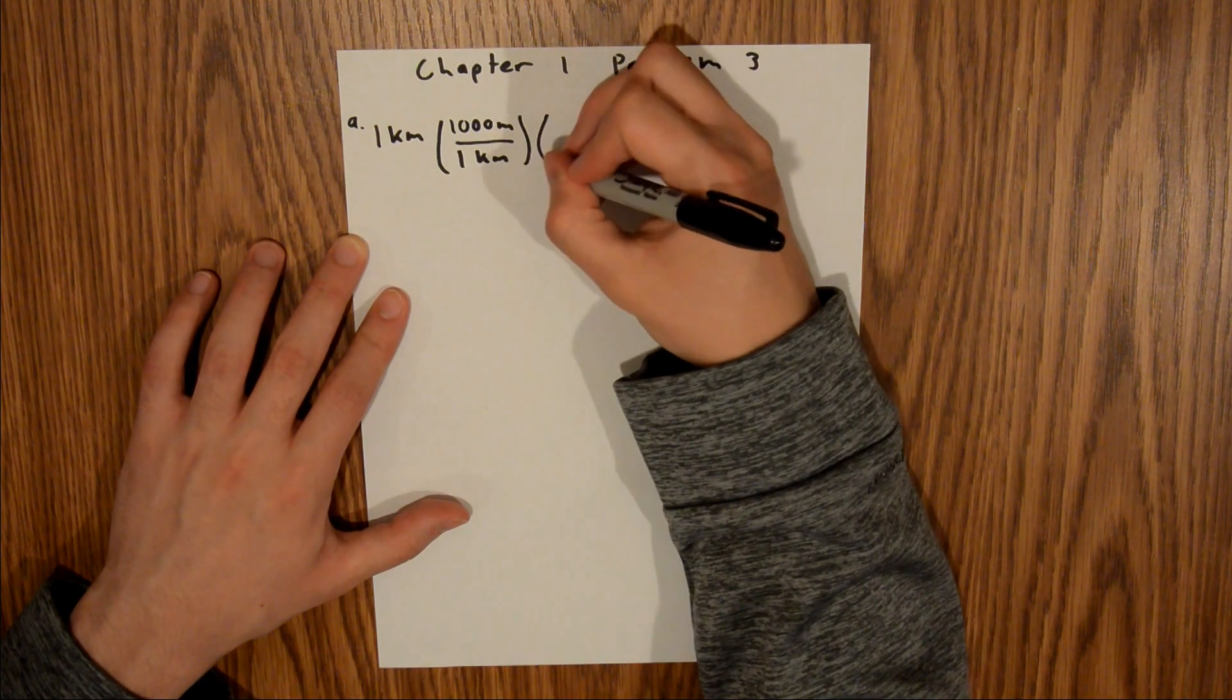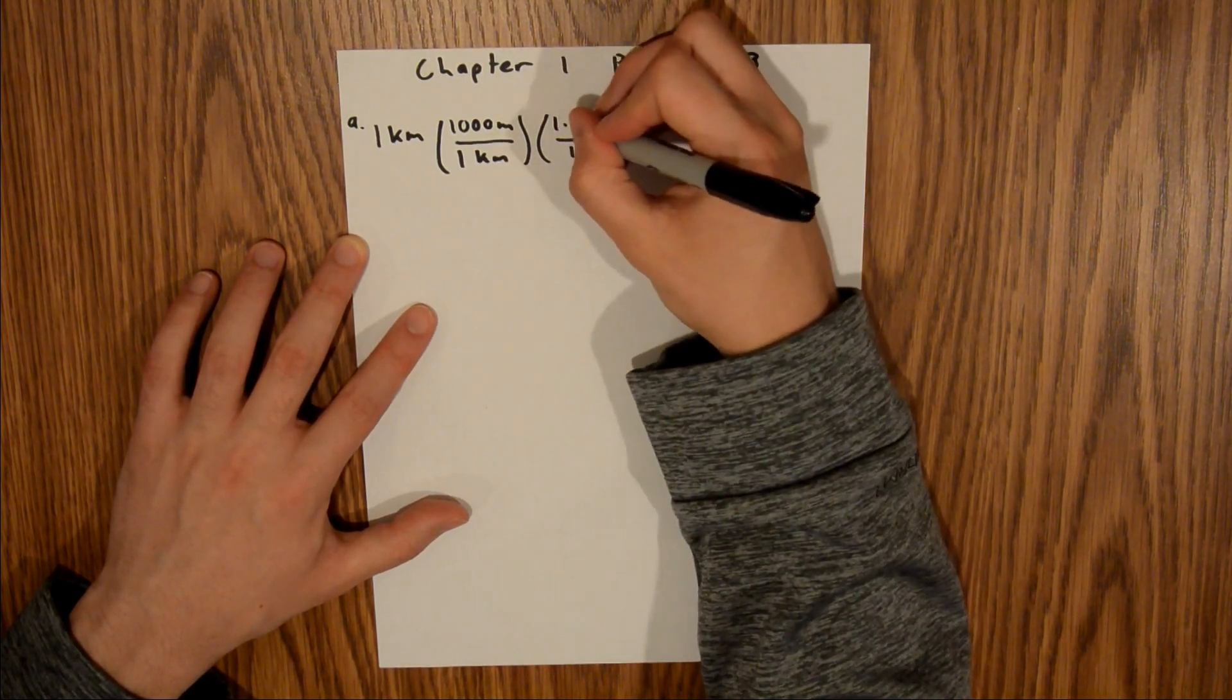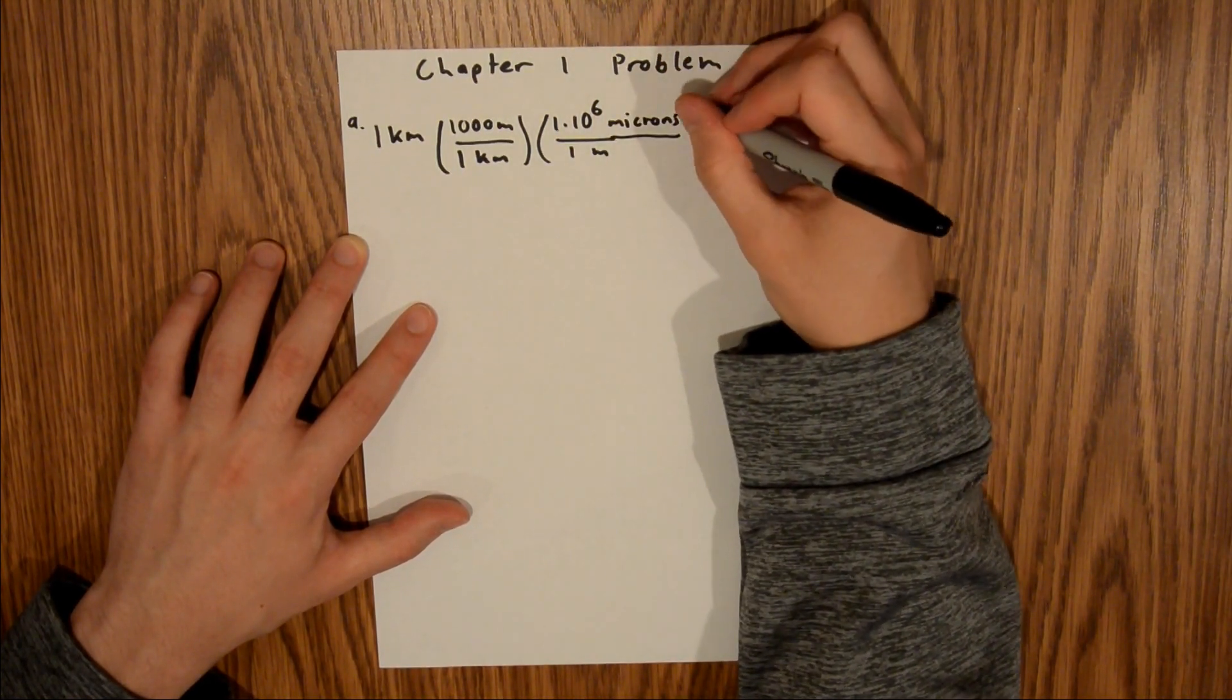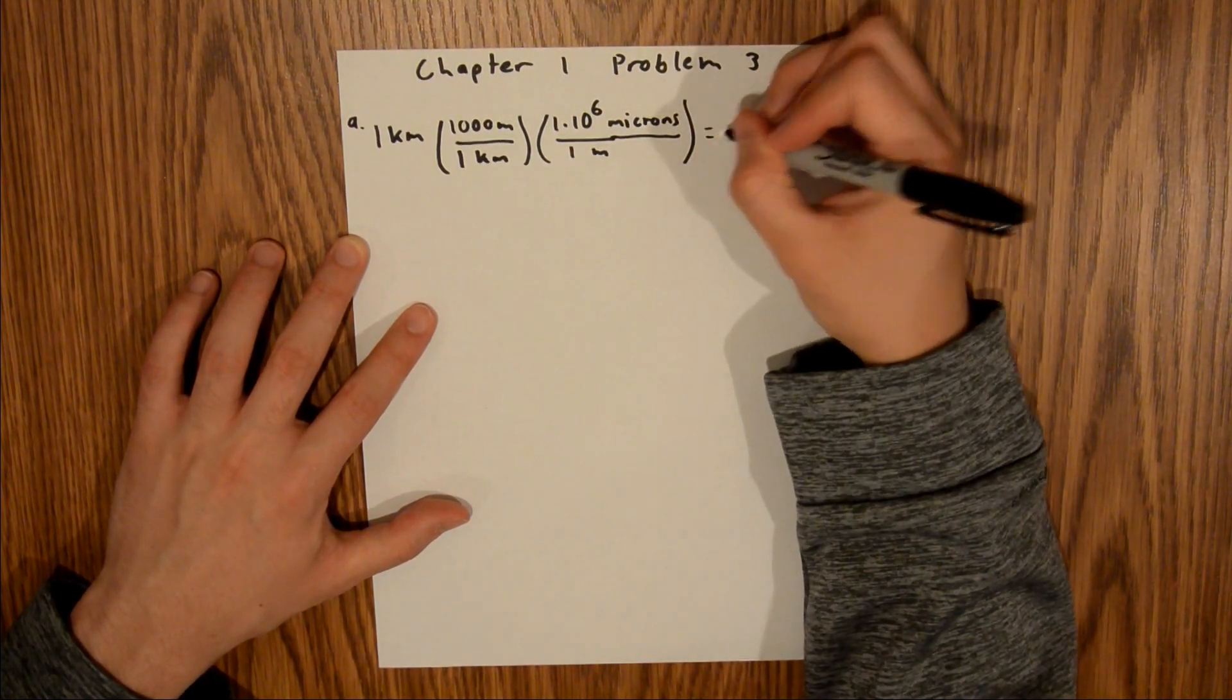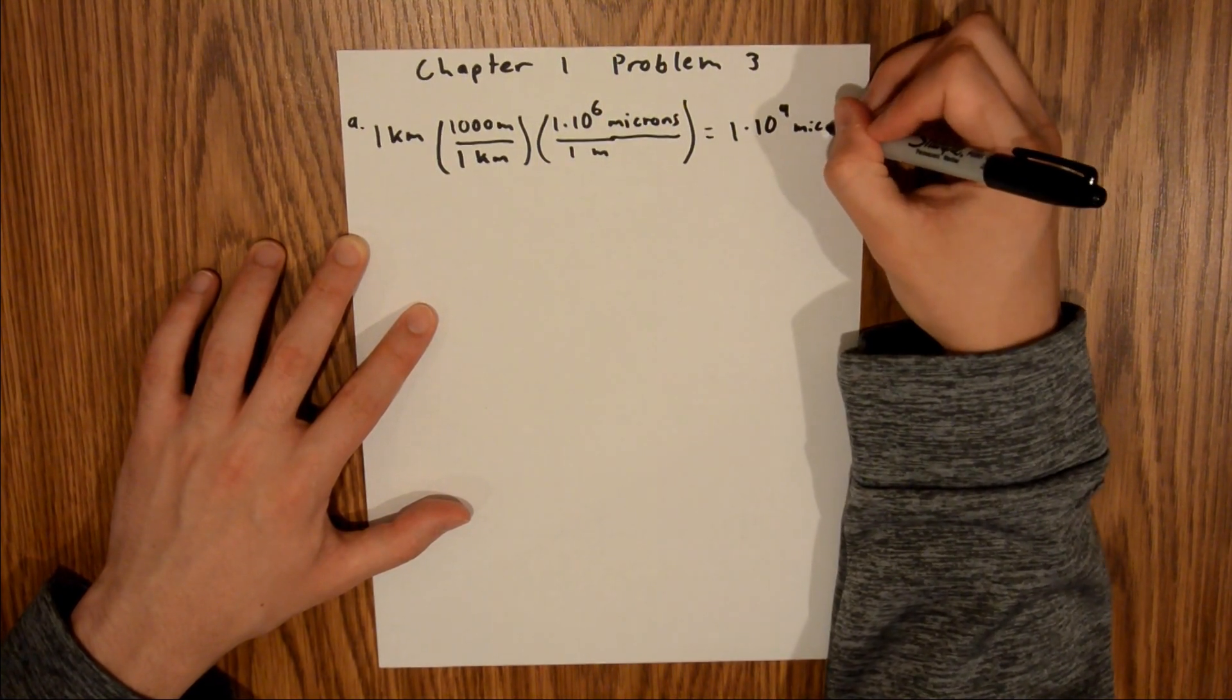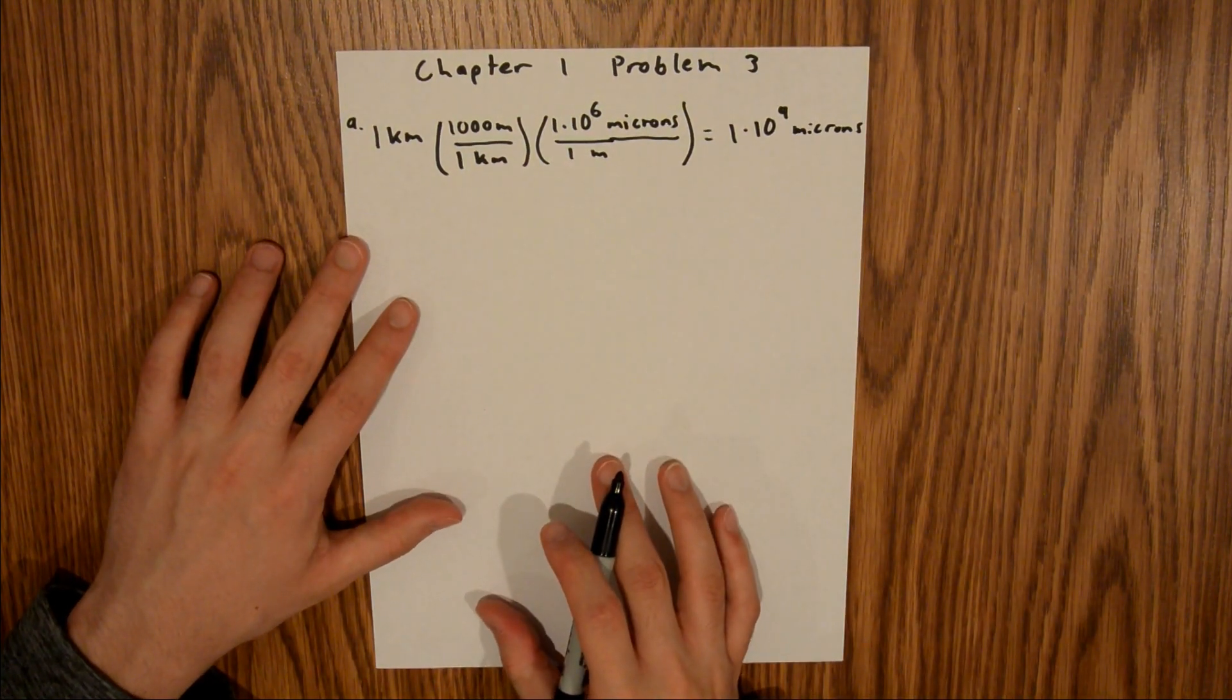And we know that 1 meter is 1 times 10 to the sixth microns. And so if you plug that into your calculator, you'll find that 1 kilometer is equal to 1 times 10 to the ninth microns. And so that's it for Part A.